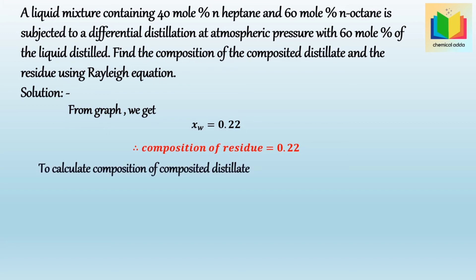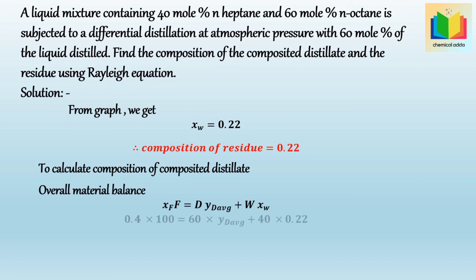To calculate the distillate composition, we write the overall material balance: X_F × F = D × Y_D(average) + W × X_W. Substituting the values: 0.4 × 100 = 60 × Y_D(average) + 40 × 0.22. Solving this equation, we get Y_D(average) = 0.52.